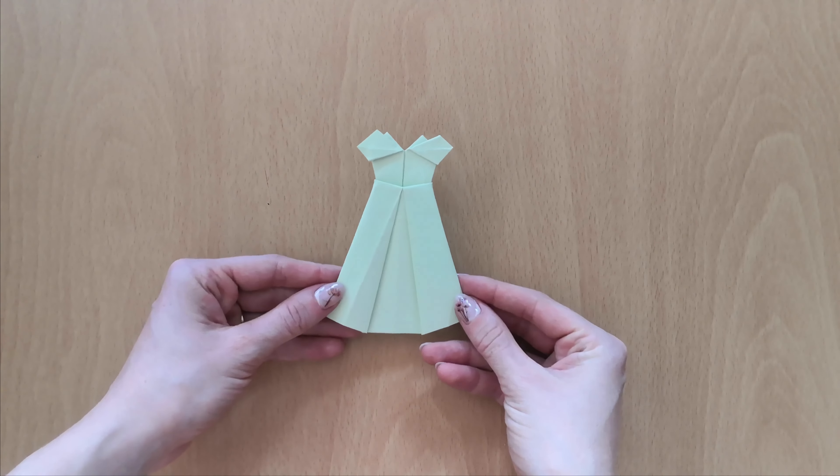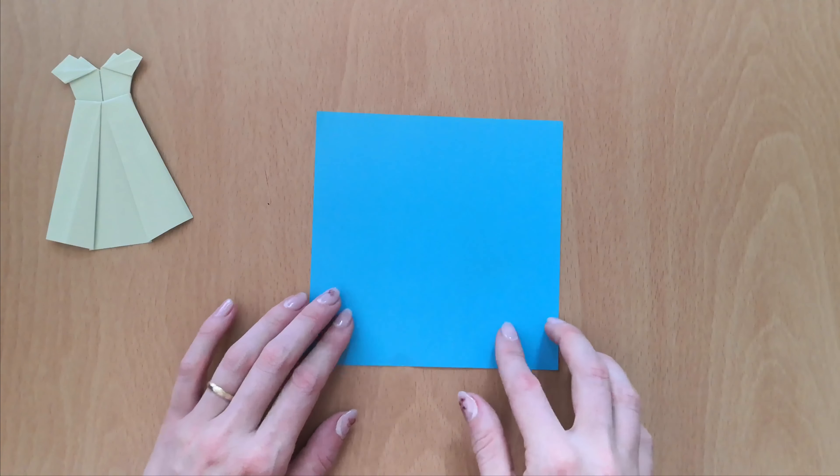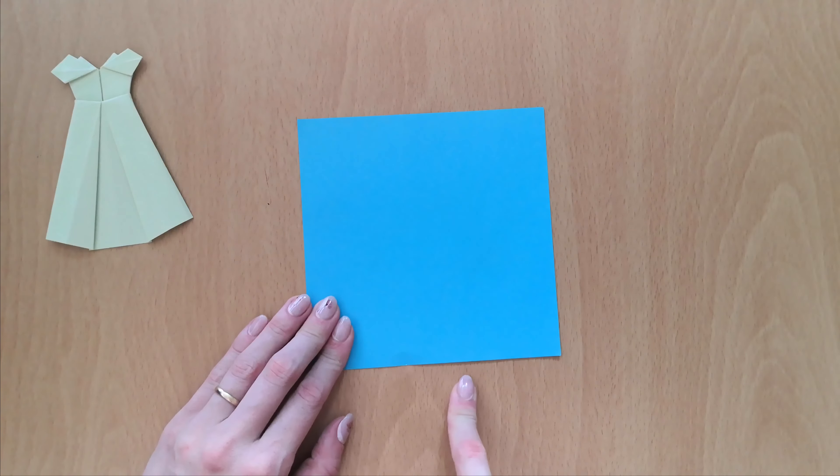Welcome back to origami videos! Let's make this paper dress together! All you're gonna need for it is a square piece of paper, I'm using 15 by 15 cm.